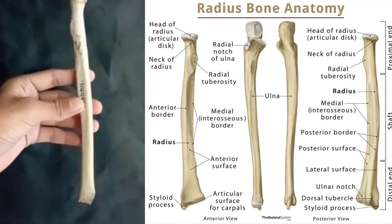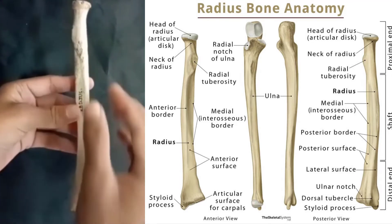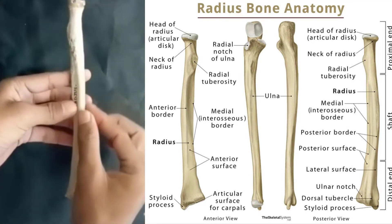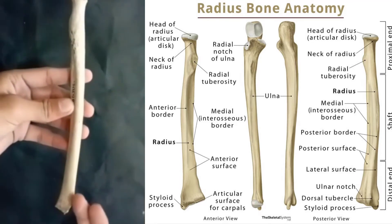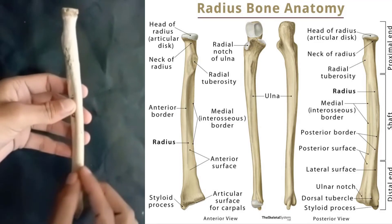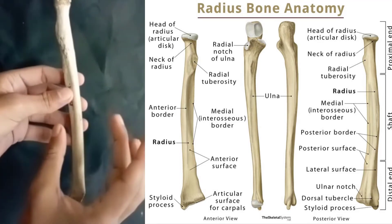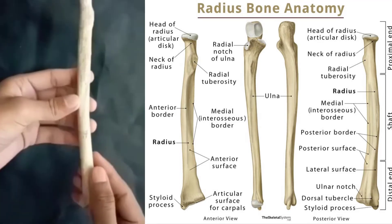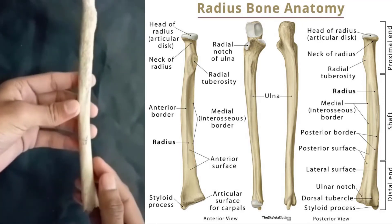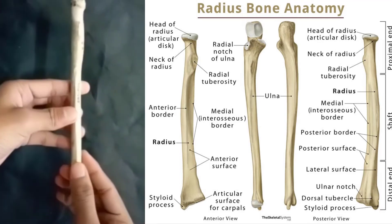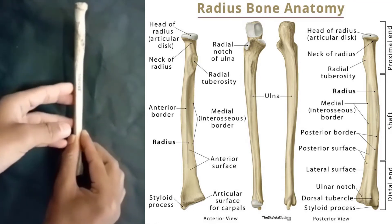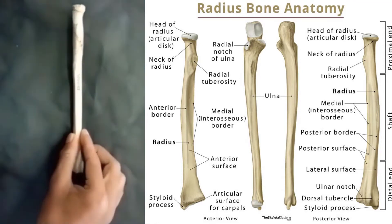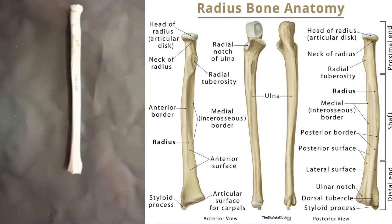The major difference between the radius and ulna is that the ulna is usually slightly longer than the radius, but the radius is thicker than the ulna. I hope you are now able to understand the position, function, and anatomy of the radius. Thank you.